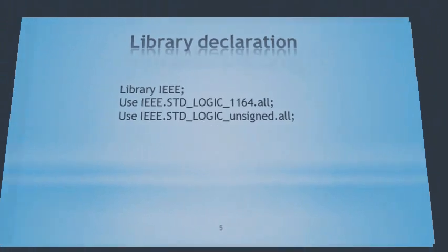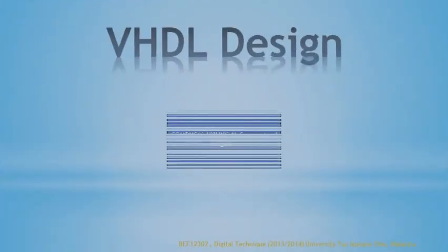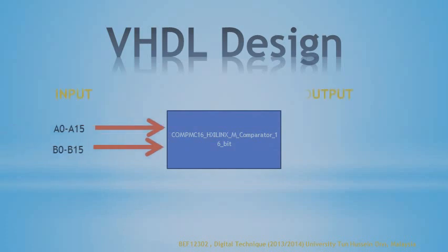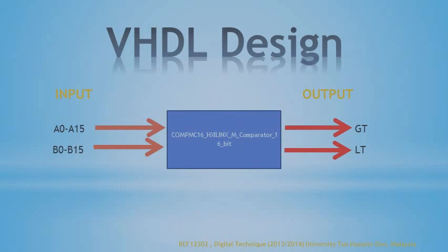Generally, the entity can be seen as the box view of the system. We give the system a name, which is the entity name, and we define input A and input B, then output C and output of the system which we need to interface. The architecture defines what is inside the system. In architecture, we can use either behavioral or structural model to write our system. In VHDL, an entity can have multiple architectures, and in a combinational logic design, there can also be more than one entity.